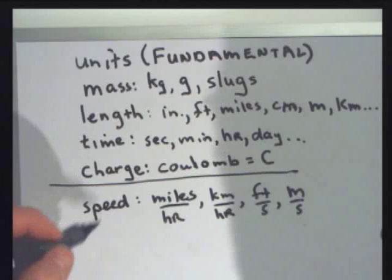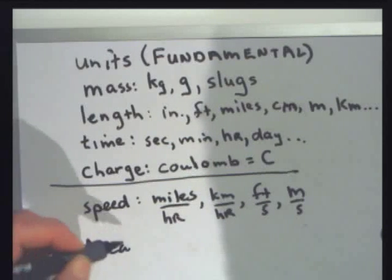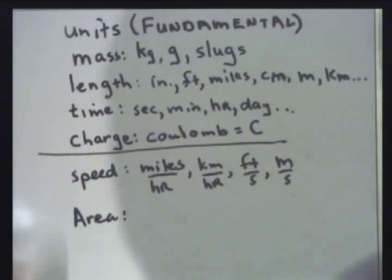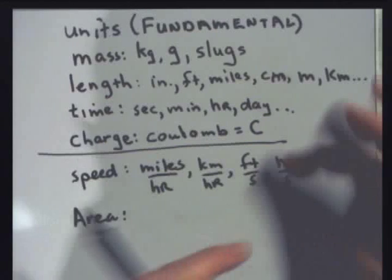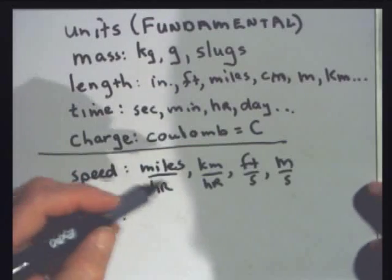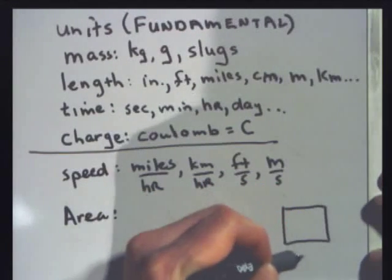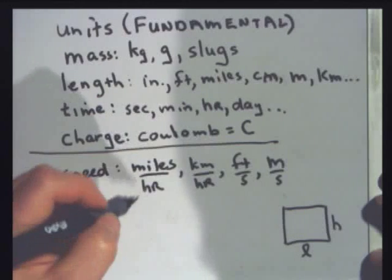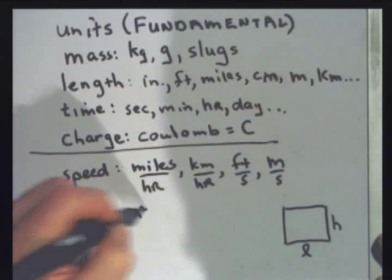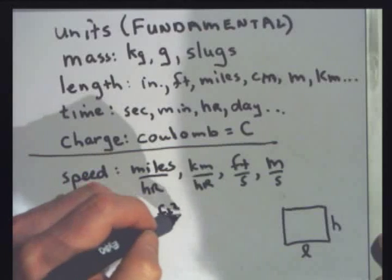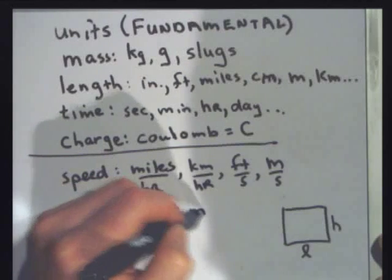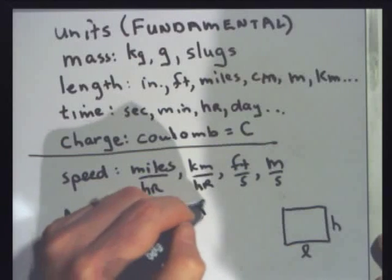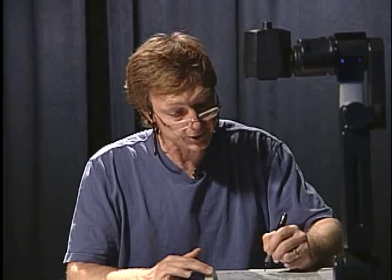If I wanted to look at area — area is length times height, two different lengths. So if I have an object like this and I want to get the area, I multiply its length times its height. The units would be those of multiplying two lengths together: meters squared, feet squared, inches squared, square miles, square kilometers. There are some units for area that aren't squared, like the acre and the hectare. There are lots of units for area.